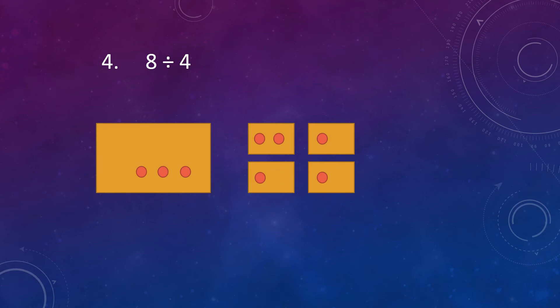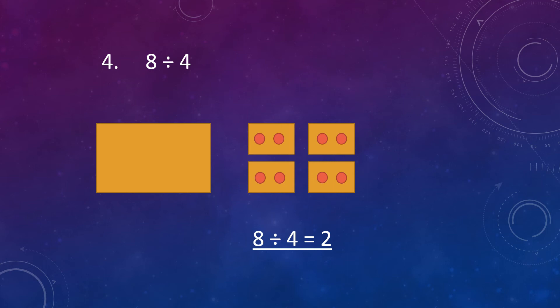Take the first dot and put it in the first box, take the second dot and put it in the second box, take the third dot and put it in the third box, take the fourth dot and put it in the fourth box. Now there are 0 dots left. All the dots have been divided and each box has 2 dots. So, 8 divided by 4 is equal to 2. This means 4 can be subtracted 2 times from 8.